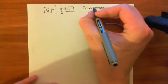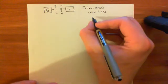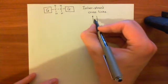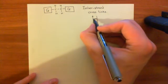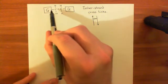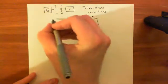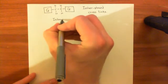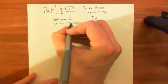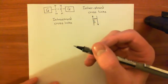Inter-strand crosslinks occur when the two strands of anti-parallel complementary DNA are covalently linked — so one guanine is on one strand and the other is on the other strand. Intra-strand crosslinks are when the two guanines that are linked are on the same strand.